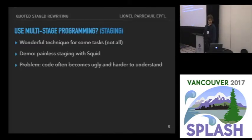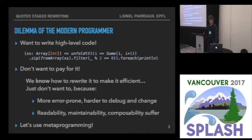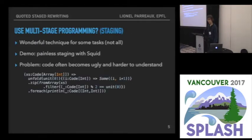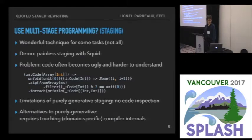Staging is good, but code that uses staged libraries often becomes more cumbersome and ugly, because you have to annotate pieces of your program with the code type. The original program looks much simpler, and now it's significantly worse — you have to adapt your whole user program to make use of staging. Also, by default, traditional staging is purely generative: you just generate code, you don't inspect it, and that can be very limiting. If you want to inspect code with alternatives such as LMS, you have to dig into the intermediate representation, look at the nodes, and it's pretty low-level and error-prone.